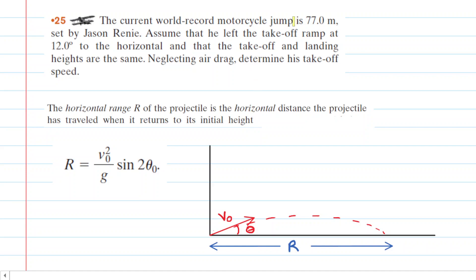In this question we are told that a motorcycle jump is 77 meters and then importantly we are permitted to make the assumption that the motorcyclist left the takeoff ramp at 12 degrees to the horizontal and that the takeoff and landing heights are the same.